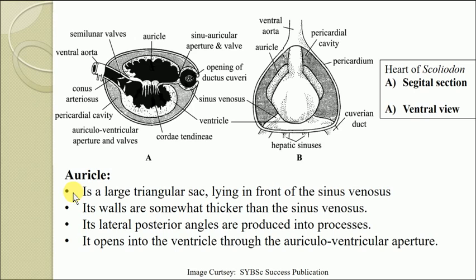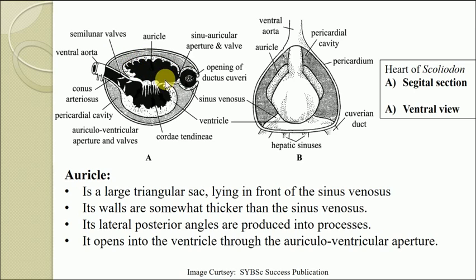The second chamber is the auricle, a large triangular sac lying in front of the sinus venosus. The auricle occupies the dorsal half of the pericardial cavity. Its walls are somewhat thicker than those of the sinus venosus, as seen in the sagittal section where the walls of the auricle are comparatively thicker.